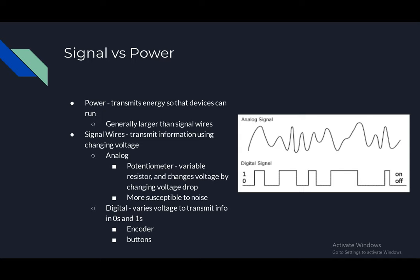Signal versus power wires: power transmits energy so that devices can run, and is generally larger than signal wires. Signal wires transmit information using changing voltage. Analog: uses a potentiometer — a variable resistor — and changes voltage by changing the voltage drop. It is more susceptible to noise. Digital: varies voltage to transmit zeros and ones, using encoders and buttons.